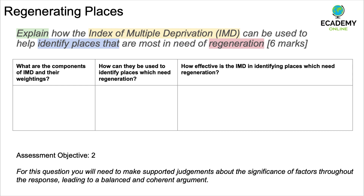So what are the components? Here's a table you can use. On the far left-hand side, list all the IMD domains with their specific weighting — some are weighted more heavily than others. In the middle, write down how they can be used to identify places which are in need of regeneration. Key note: don't confuse regeneration with gentrification.